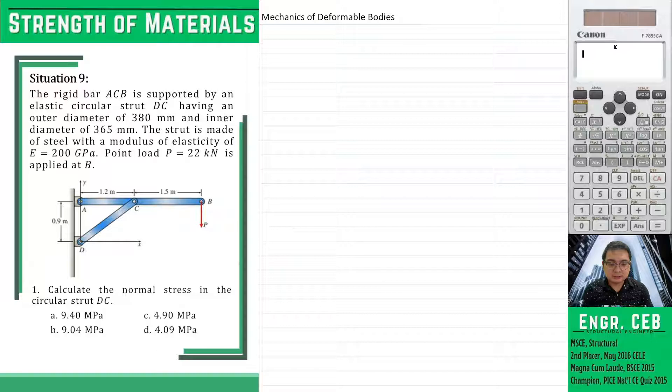Situation 9. The rigid bar ACB is supported by an elastic circular strut BC having an outer diameter of 380 millimeters and inner diameter of 365 millimeters. The strut is made of steel with a modulus of elasticity of 200 gigapascal. Point load P is applied at B.